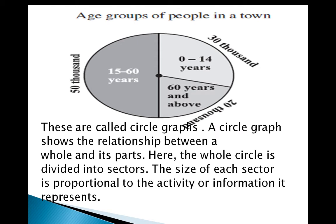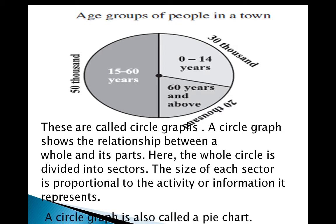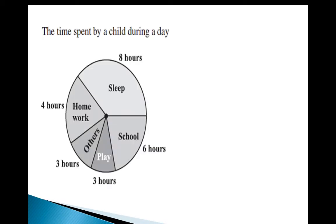A circle graph shows the relationship between a whole and its parts. Here the whole circle is divided into sectors. The size of each sector is proportional to the activity or information it represents. So whatever data, whatever information is given to us, we have to arrange it systematically, organize it, and represent it in a circle chart. Circle graph is also called a pie chart.